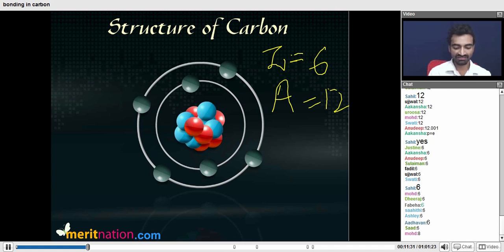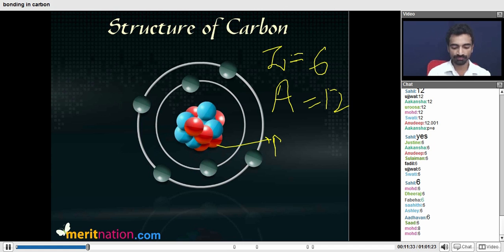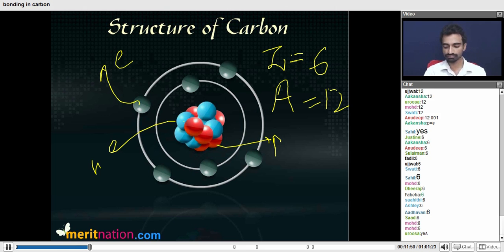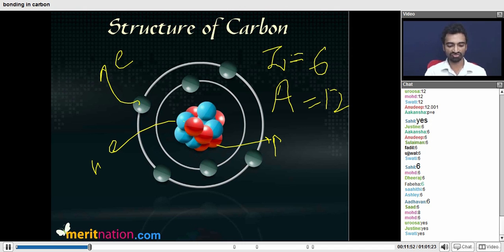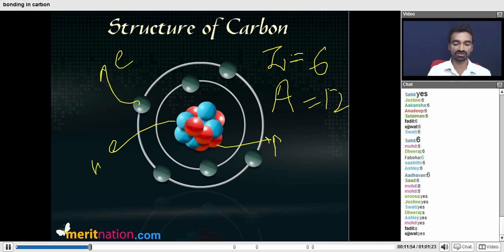So these red ones are your protons, these blue ones are your neutrons, and these green ones in the orbit around the nucleus are your electrons. So I have exactly six protons, six neutrons, and six electrons. All right, is this part clear to everyone? Okay great, so this is the structure of carbon.